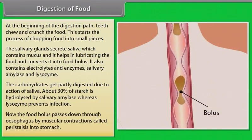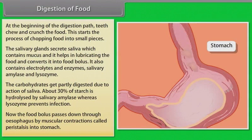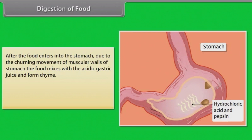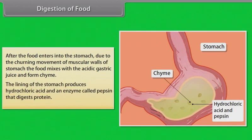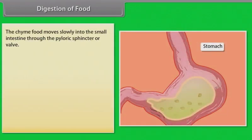The food bolus passes down through the esophagus by muscular contractions called peristalsis into the stomach. Due to the churning movement of the muscular walls of the stomach, food mixes with the acidic gastric juice and forms chyme. The lining of the stomach produces hydrochloric acid and an enzyme called pepsin that digests protein. The chyme then moves slowly into the small intestine through the pyloric sphincter or valve.